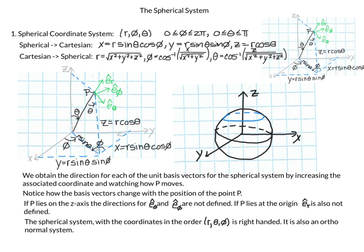The spherical system with coordinates in the order r, theta, phi is a right-handed system: orient your hand pointing along r, curl your fingers in the direction of theta, and your thumb points in the phi direction. It is also orthonormal: dot any basis vector with itself and you get 1 (unit length); dot one with a different basis vector and you get 0 because they are perpendicular.